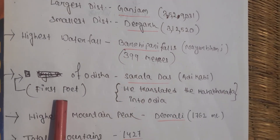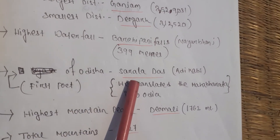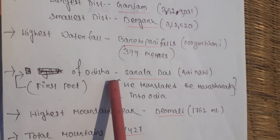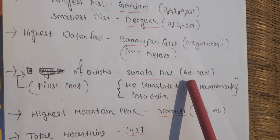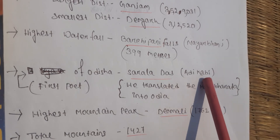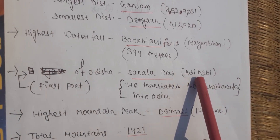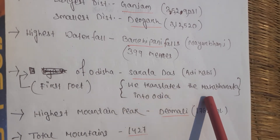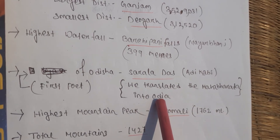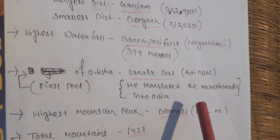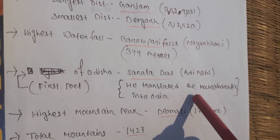The first poet of Odisha is Sarala Das, also known as 'Adi Kabi,' meaning first poet. He translated the Mahabharata into Odia. The writer of the Odia Mahabharata is Sarala Das, while the writer of the Hindi Mahabharata is Vedvyas.